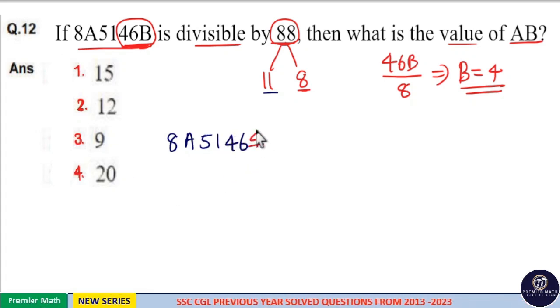Now, take the odd place sum and even place sum. Odd place sum is 4 plus 4, 8; 8 plus 5, 13; 13 plus 8 is equal to 21.